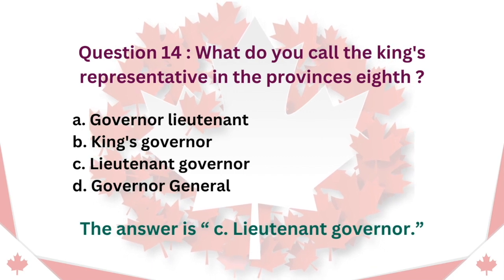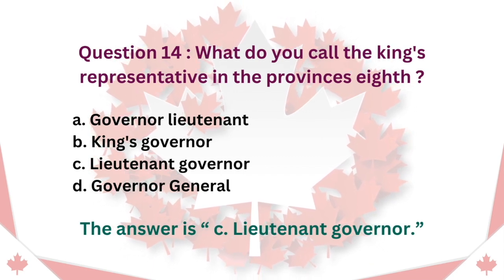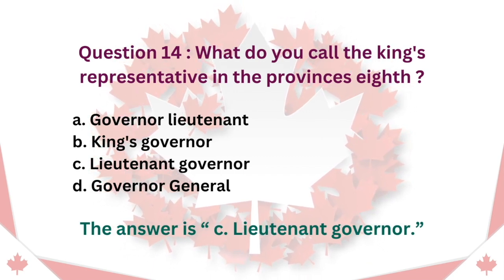Question 14: What do you call the King's representative in the provinces? A. Governor-Lieutenant. B. King's Governor. C. Lieutenant Governor. D. Governor General. The answer is C. Lieutenant Governor.